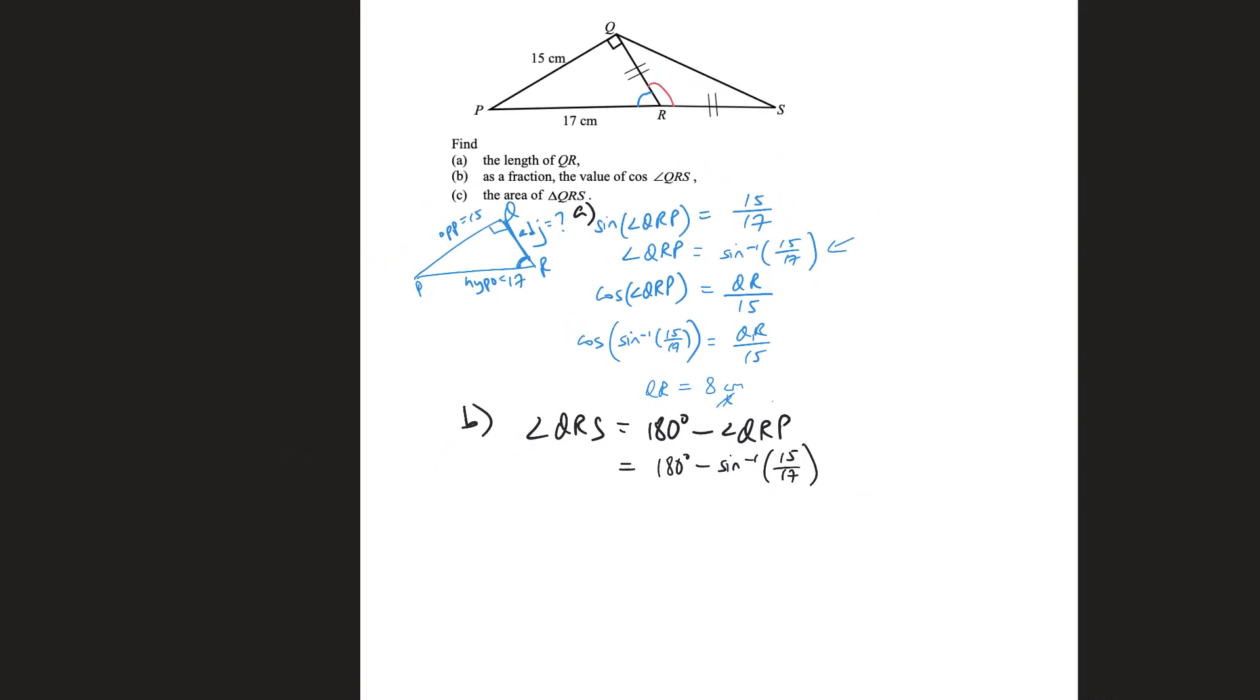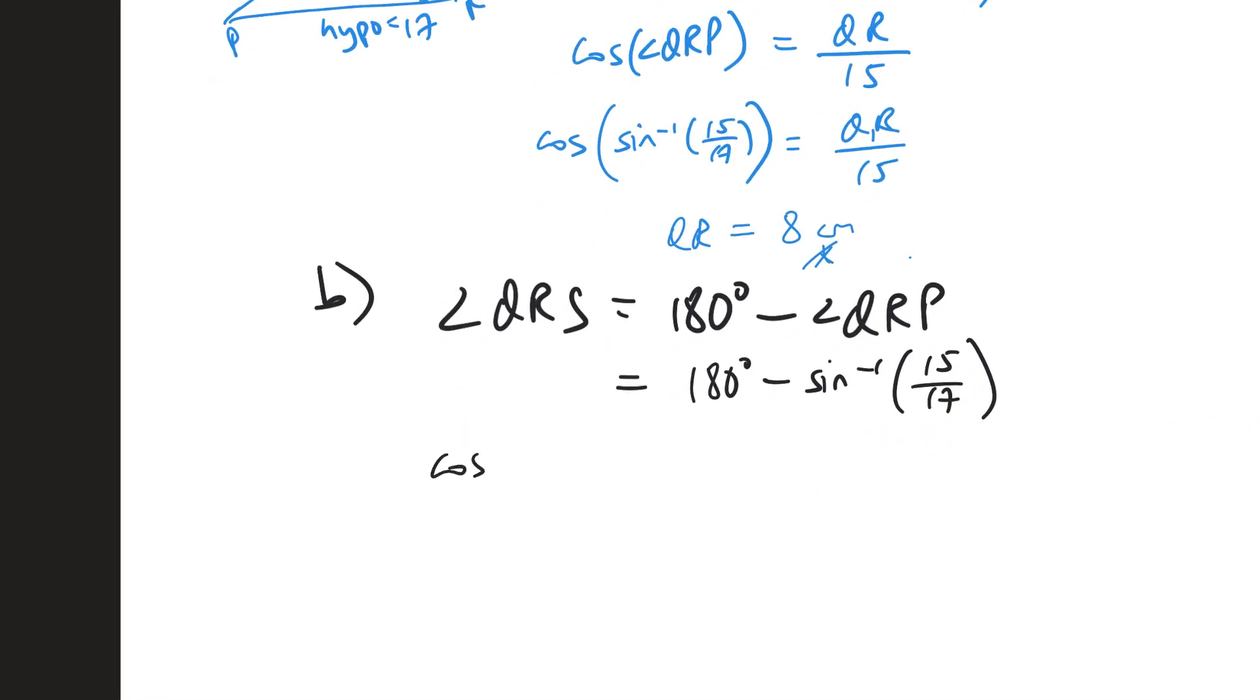And then I say cosine of this will be cosine QRS, cosine of this. Once again, key this into a calculator first, 180 minus sine inverse 15 over 17, and then cosine the result. And then you will see that this will spit out for you, negative 8 over 17.